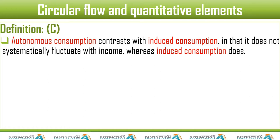One thing that could affect autonomous consumption is wealth — for example, if South Africans became wealthier than before, their autonomous consumption could go up. So it has nothing to do with income, but it could be affected by other things like wealth. The two — autonomous and induced — are related for all households through the consumption function: C = C₀ + C₁·YD, where C₀ is autonomous consumption (sometimes written as C-bar), C₁ is the marginal propensity to consume (MPC), and YD is disposable income.